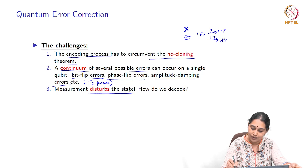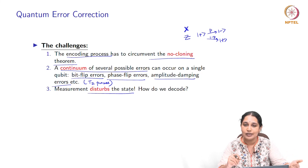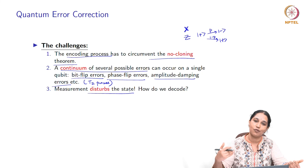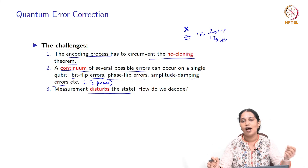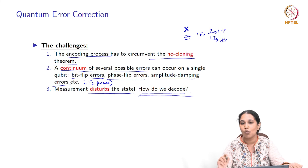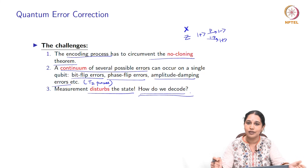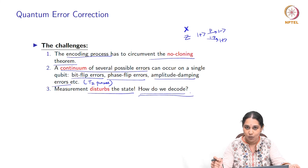So this is the second challenge: we seem to have multiple noise models. How do we build error correcting codes to deal with multiple kinds of noise? And finally, one of the most important challenges is the fact that measurement disturbs a quantum state. We discussed the measurement postulate in week one and said that measurement leads to collapse of the state — it breaks the superposition and makes the state collapse into one of a set of orthogonal states. So how do we detect errors? Because if we are going to measure the qubit, then by the very act of measurement we are going to destroy the information in the state. So how do we manage to overcome this and decode quantum information?